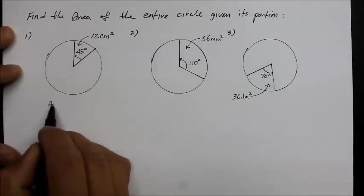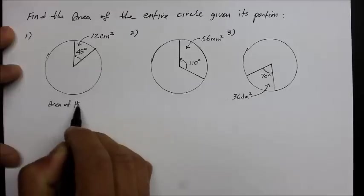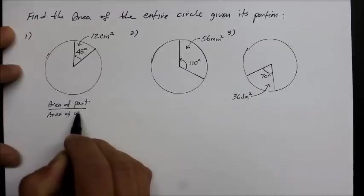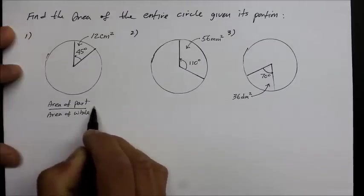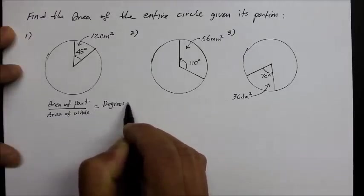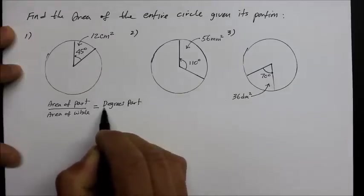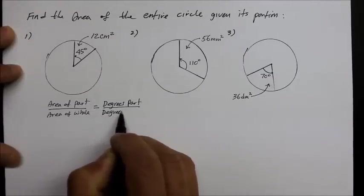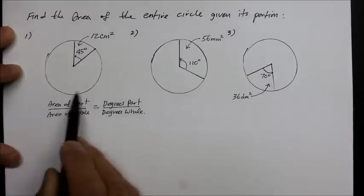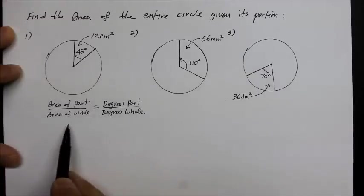You want to take a number, area of the part divided by area of the whole. And proportionally, that's going to be equal to the degrees of the part divided by the degrees of whole. Does that kind of remind you of anything? Maybe when we talked about percents? Yeah, it's a proportions and ratios concept.